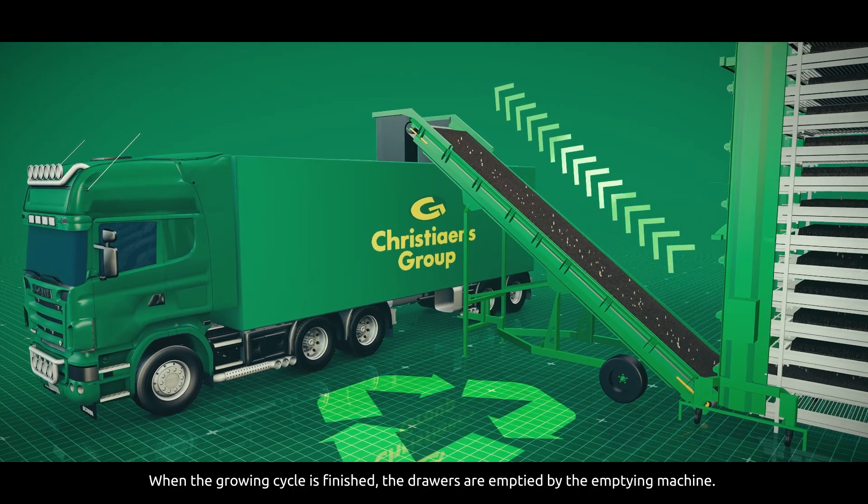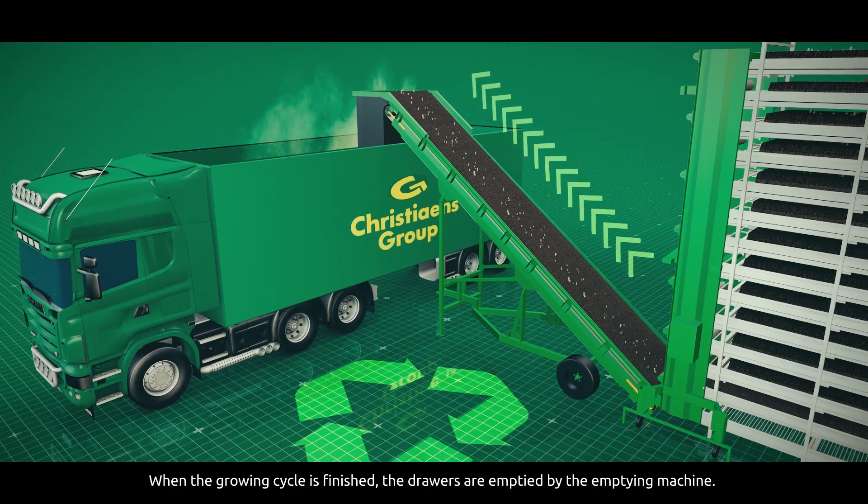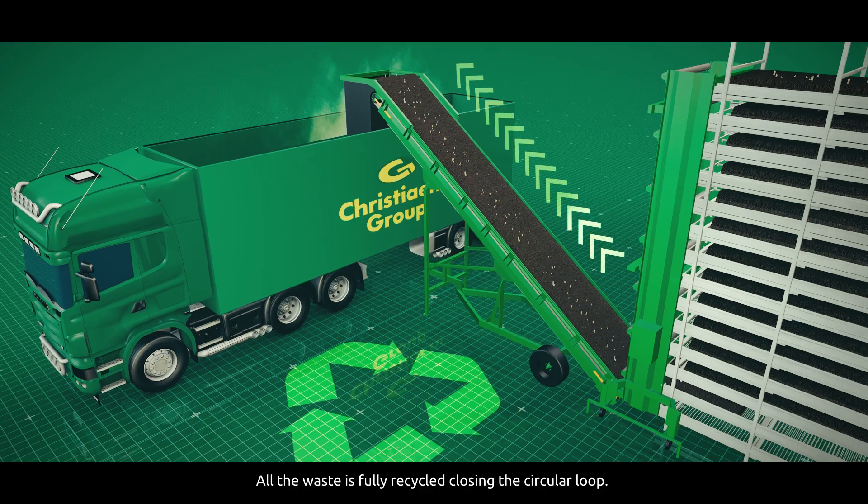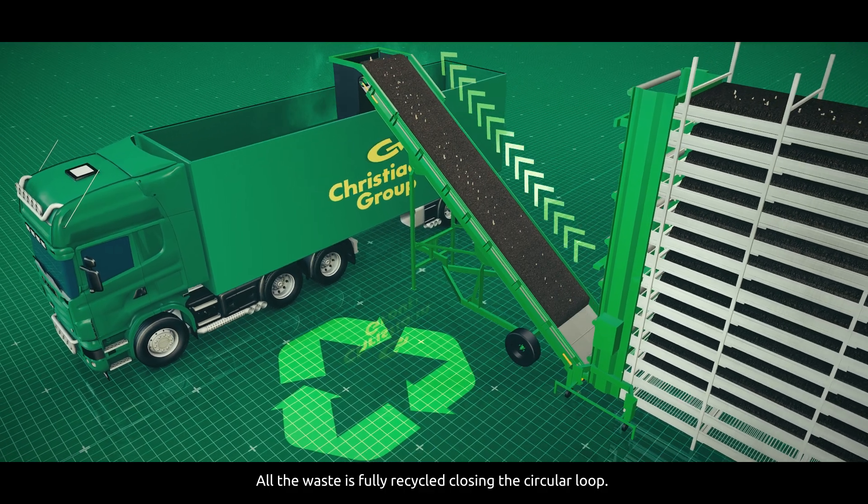When the growing cycle is finished, the drawers are emptied by the emptying machine. All the waste is fully recycled, closing the circular loop.